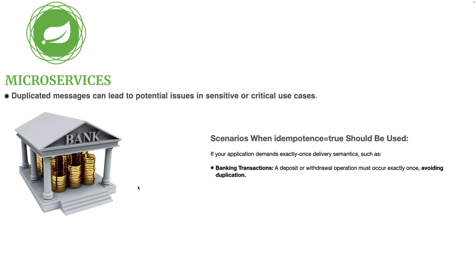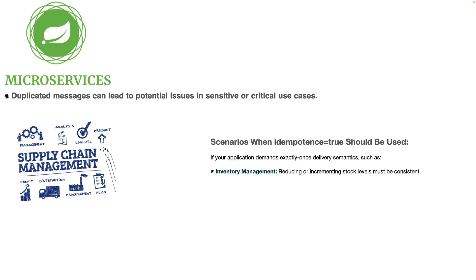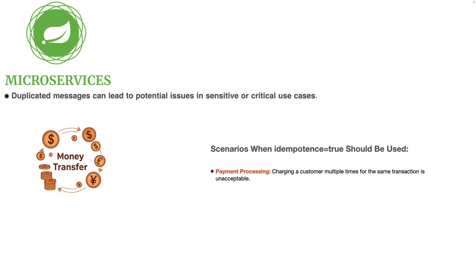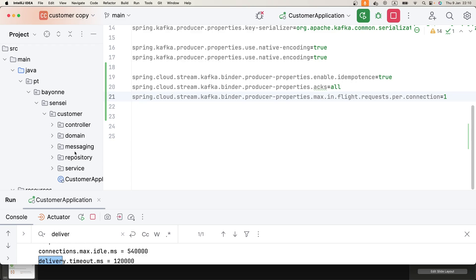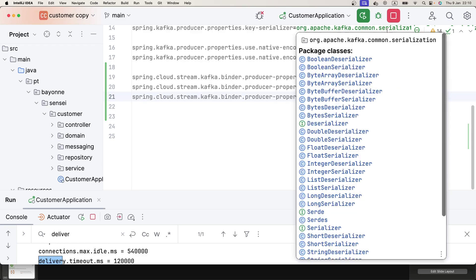Imagine receiving a deposit twice — that might seem nice — but a duplicate withdrawal is a serious problem. Other affected use cases include supply chain management, where duplicate messages can be a big problem, and payment gateways, where charging a customer multiple times instead of once can cause major issues for your system or company. Stay with us, hope you enjoyed this video — don't forget to like and subscribe, bye bye!